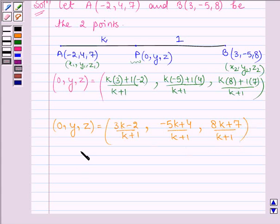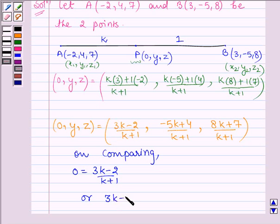Now on comparing the coordinates we have 0 is equal to (3k - 2) upon (k + 1) or this further implies 3k - 2 is equal to 0 or k is equal to 2 upon 3.